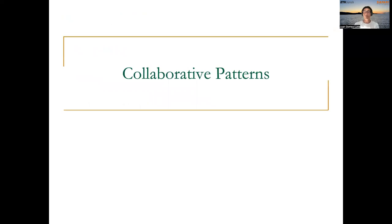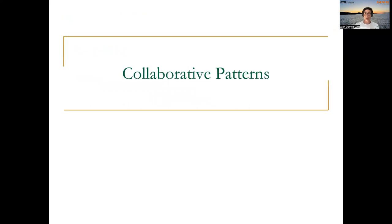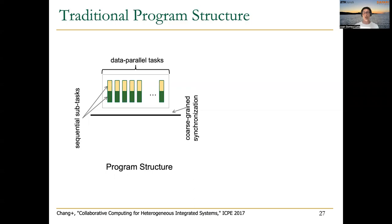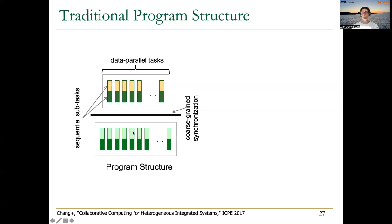Now we are more familiar with unified memory and the possibilities of using it for fine-grained collaboration. We will present briefly some collaborative patterns and examples. Starting with the conventional program structure: we have tasks that can be divided into sequential subtasks, many data-parallel tasks. At some point a coarse-grained synchronization is needed before continuing execution. On a GPU, the first bunch of data-parallel tasks represents a GPU kernel, and the coarse-grained synchronization is the kernel termination before the second kernel starts.